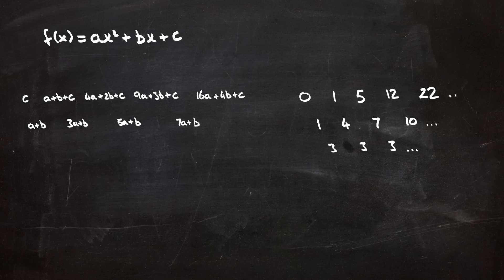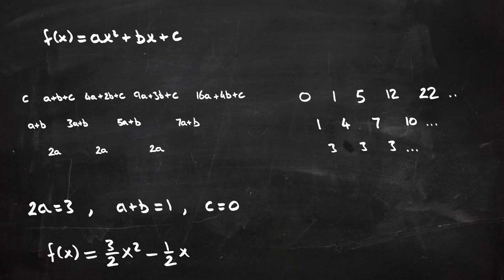Then we'll take a look at the differences, so we get a sequence of differences, and a sequence of second differences. Now by comparing our sequences, we can see that 2a equals three, or in other words a equals three halves, and a plus b equals one, or in other words b equals minus a half, and looking at the top, c equals zero.